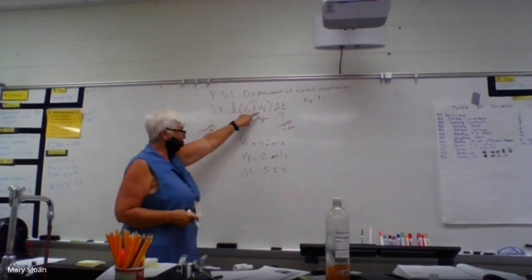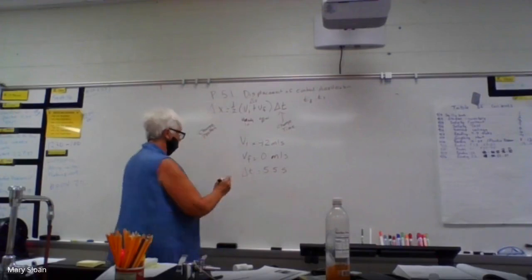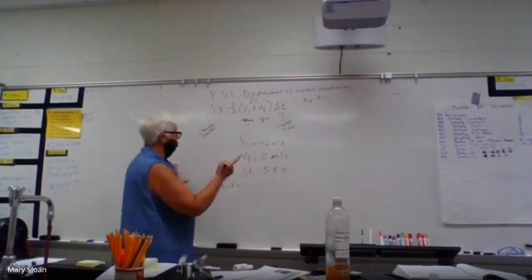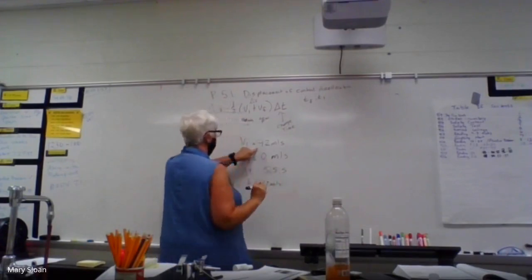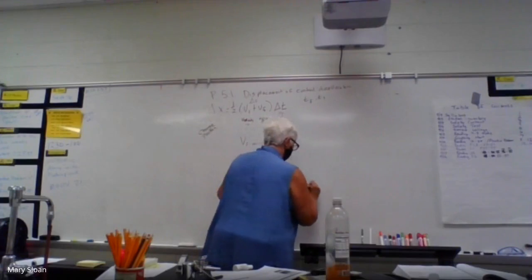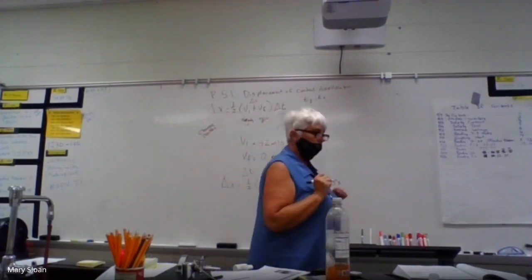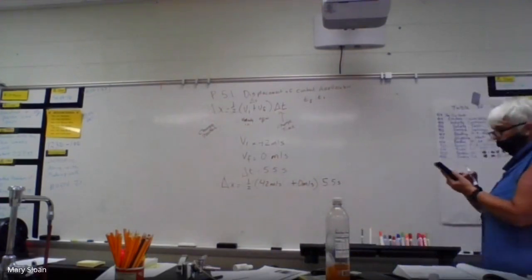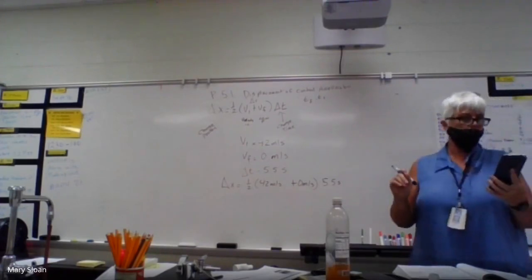So then it says it comes to rest 5.5 seconds later. Now, what's my initial time? Zero seconds. What's my final time? 5.5 seconds. So they're just telling us what it is. Change in time is 5.5 seconds. Now we have velocity initial, velocity final, and change in time. We don't have to change our formula.